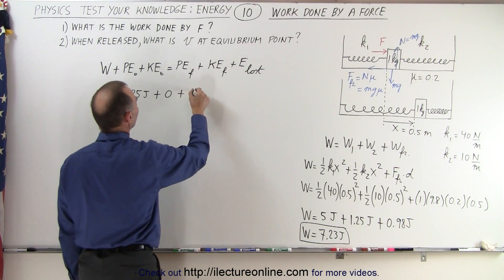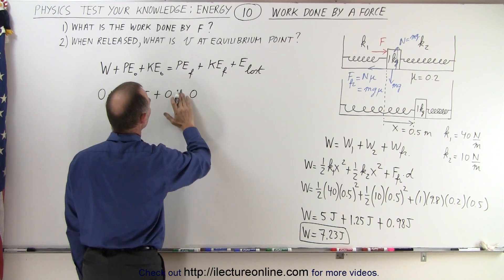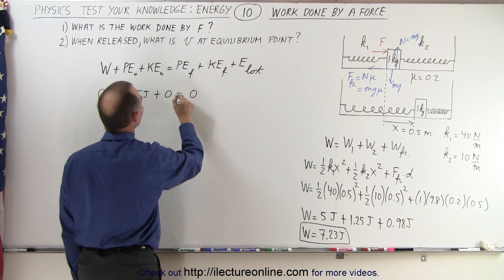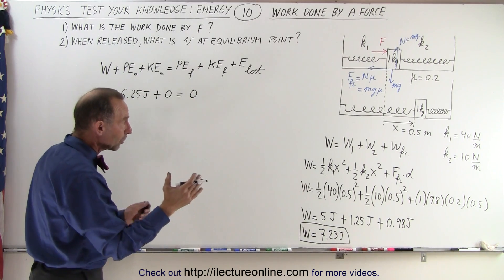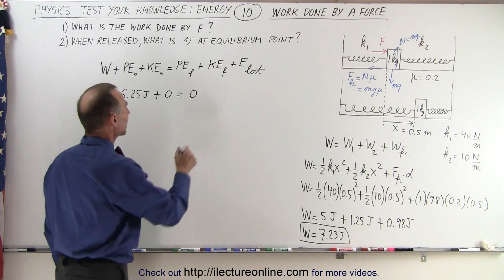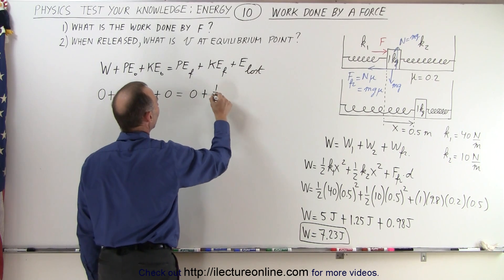Potential energy final will be 0 by the time—I should have an equal sign here—so this is equal, potential energy final will be 0 because there's no compressed or elongated spring. Kinetic energy will be one half mv squared.